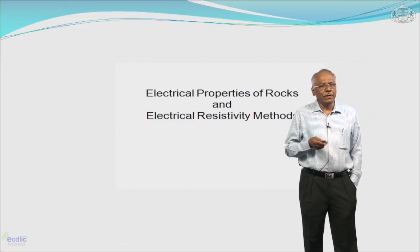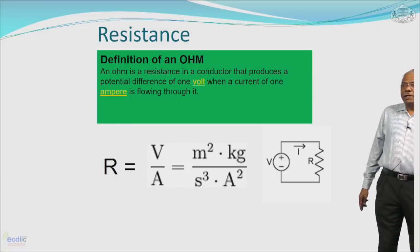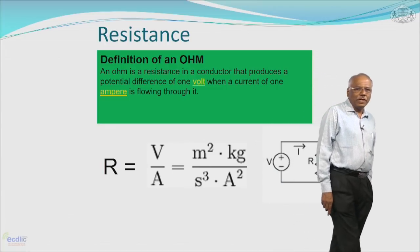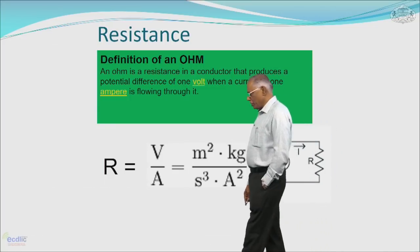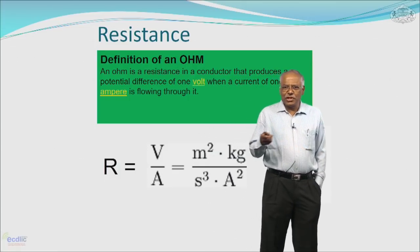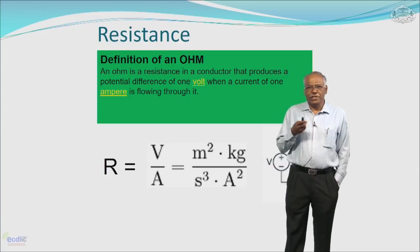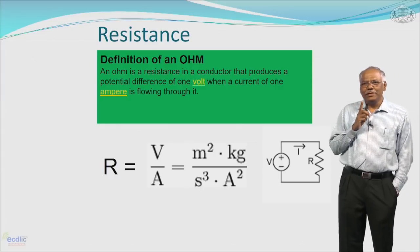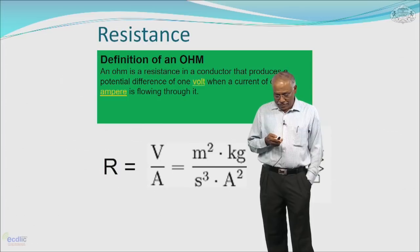There are certain electrical properties of rocks determined using the electrical resistivity method. One of the properties is resistance. Resistance is V/A — V is the potential and A is the area — and is measured in ohms. An ohm is the unit of resistance in a conductor that produces a potential difference of 1 volt when a current of 1 ampere is flowing through it. Ohm's law is used here: I = V/R, where I is the electric current, V is the voltage, and R is the resistance.